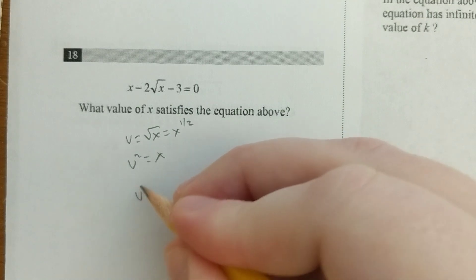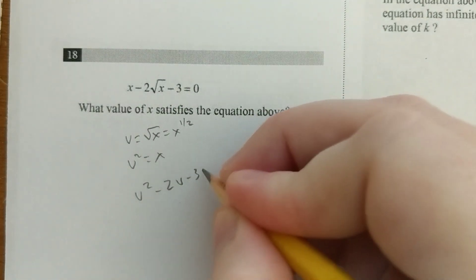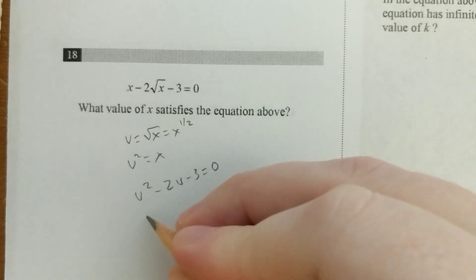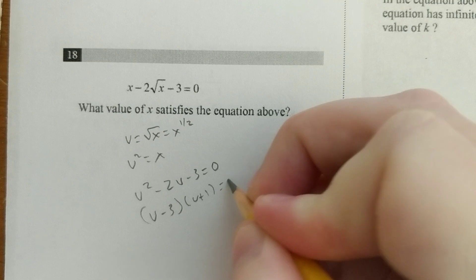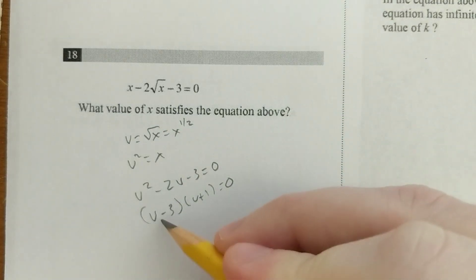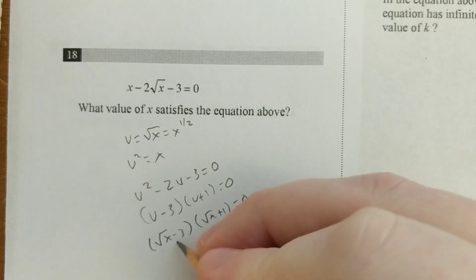So now we can rewrite this as u squared minus 2u minus 3 equals 0. And that's, again, quite a bit easier to factor. So you get this. Now we can put our u back in. So we have square root of x minus 3, square root of x plus 1. We're going to set them both equal to 0.